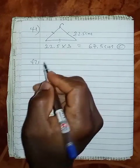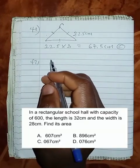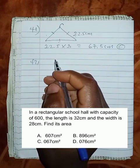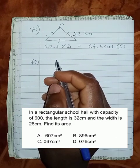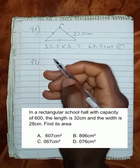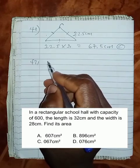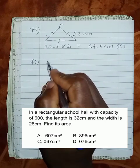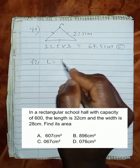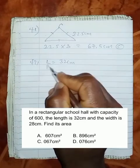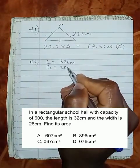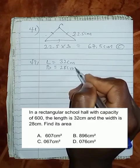Question 42 says, in a rectangular school hall with capacity of 600, the length is 32 cm and the width is 28 cm. Find its area. The rectangular school hall must have the form of a rectangle. We're told that the length is 32 cm, while the breadth is 28 cm.